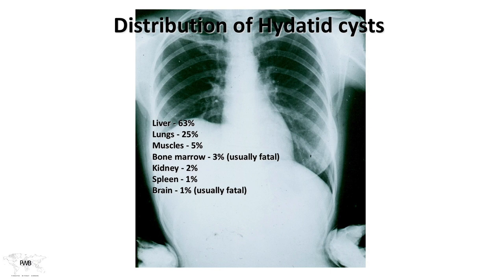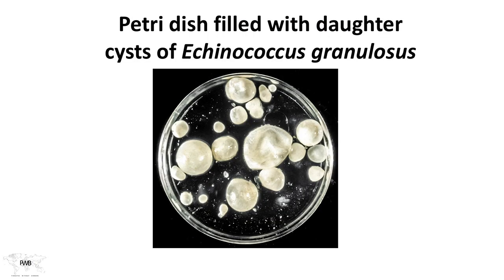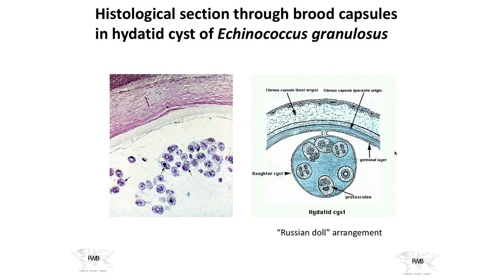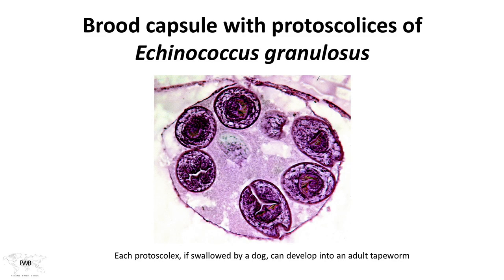The distribution of hydatid cysts: approximately 65% in the liver, about 25% in the lungs, about 5% in muscles, a few percent in bone marrow, a couple percent in the kidney, and less commonly the spleen and brain. Shown here is a dish filled with daughter cysts and histological sections showing the broad capsules. You can see the main cyst and small daughter cysts forming, with the germinal layer — cells with potential to form all kinds of new cysts. And to complete the life cycle, each protoscolex, if swallowed by a dog, can form the adult tapeworm.